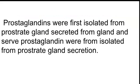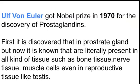Prostaglandins were first isolated from the prostate gland. Ulf von Euler got the Nobel Prize in 1970 for the discovery of prostaglandins. It was first discovered in the prostate gland, but now it is known that they are literally present in all kinds of tissues.